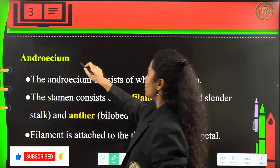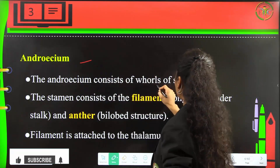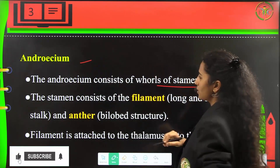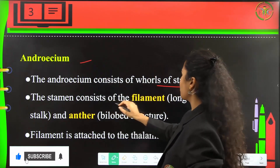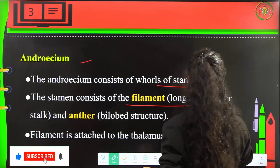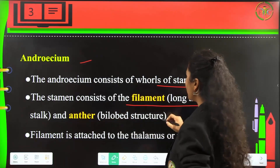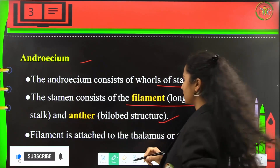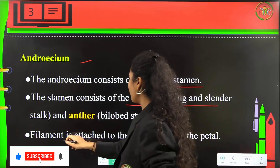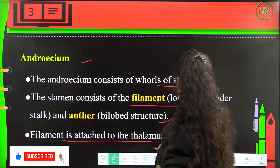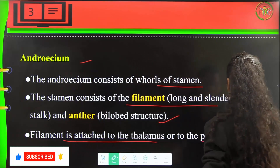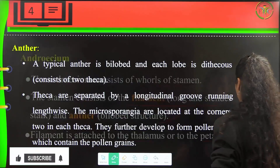Now, androecium consists of whorls of stamen. The stamen consists of a filament, which is a long, slender stalk, and the anther, which is a bilobed structure. The filament is attached to the thalamus or to the petal.